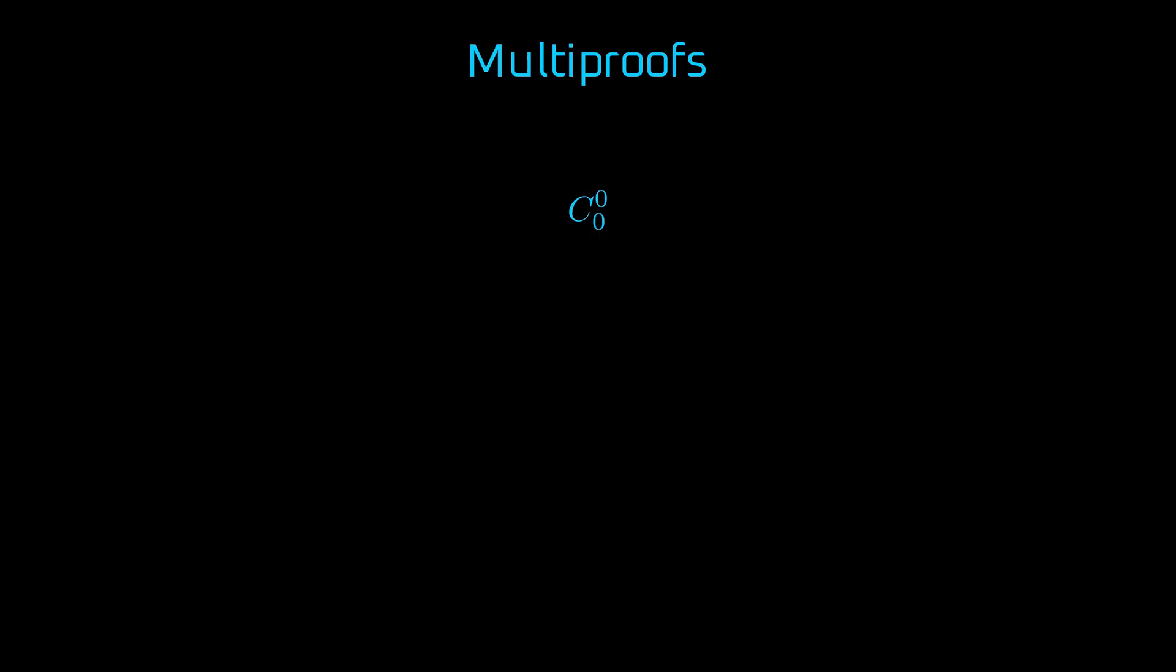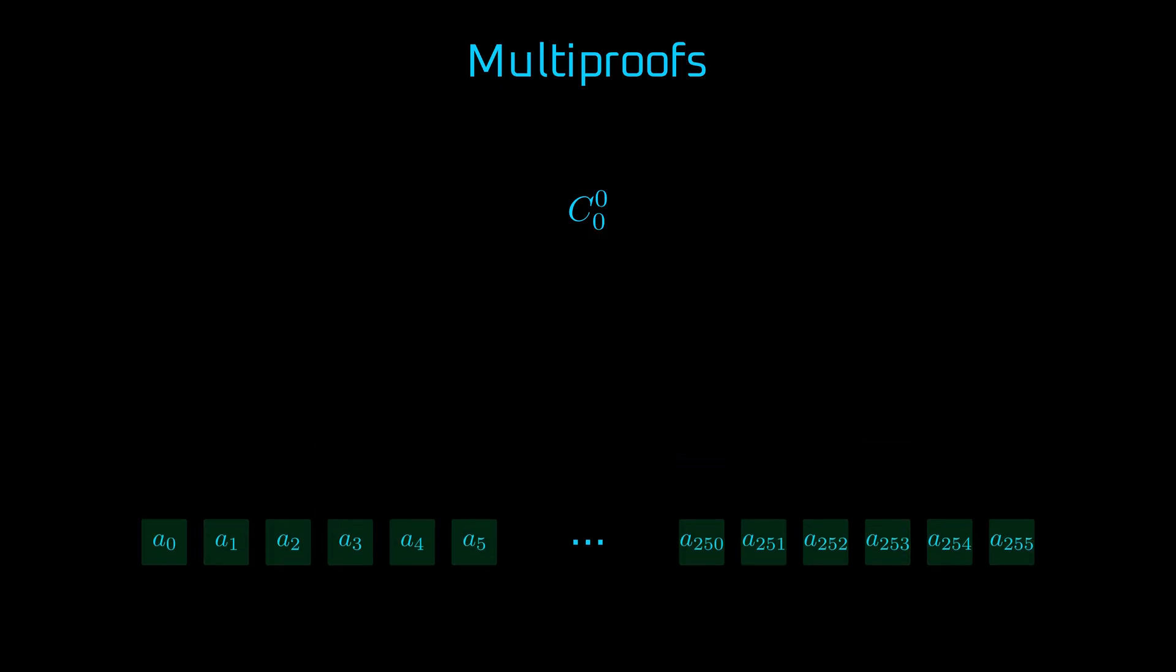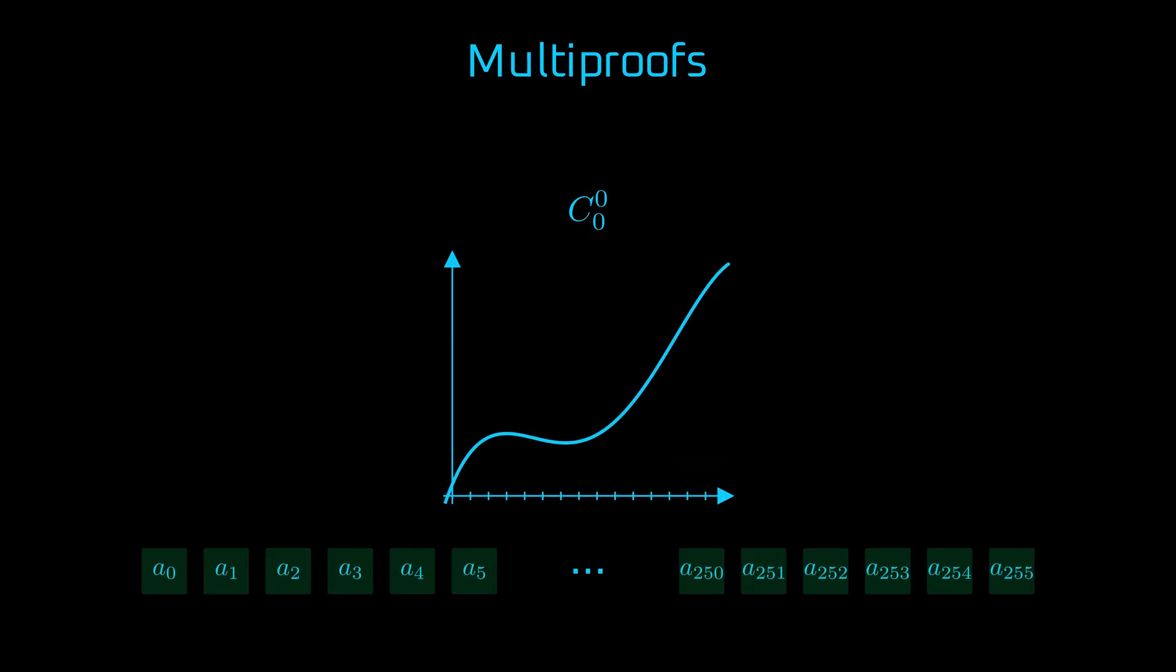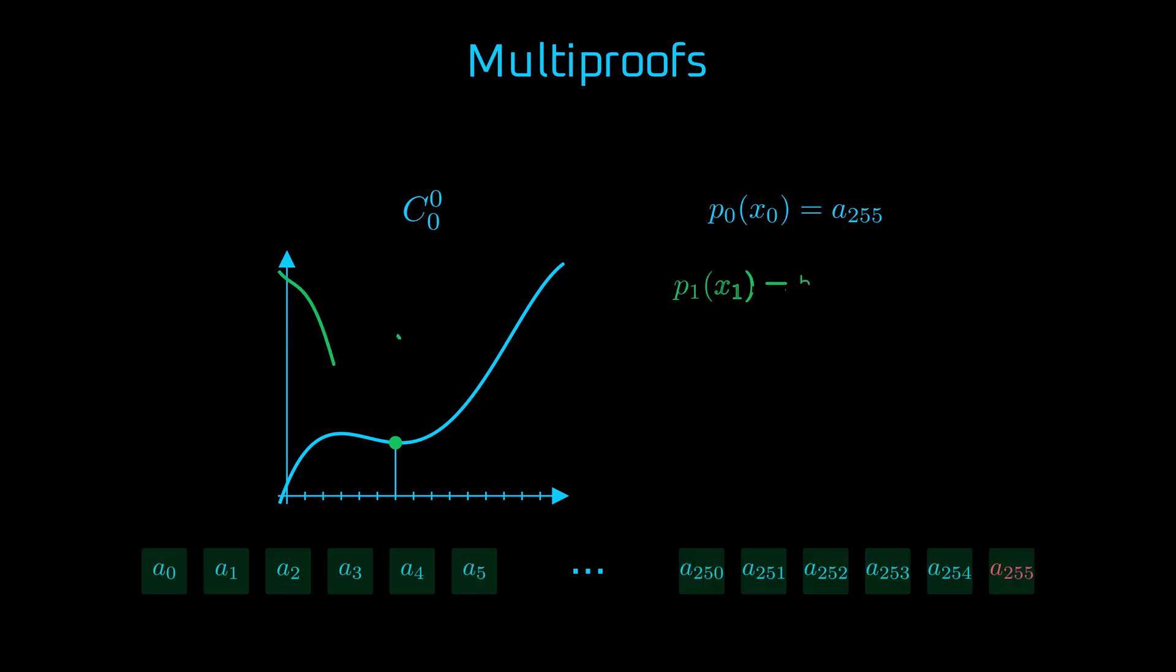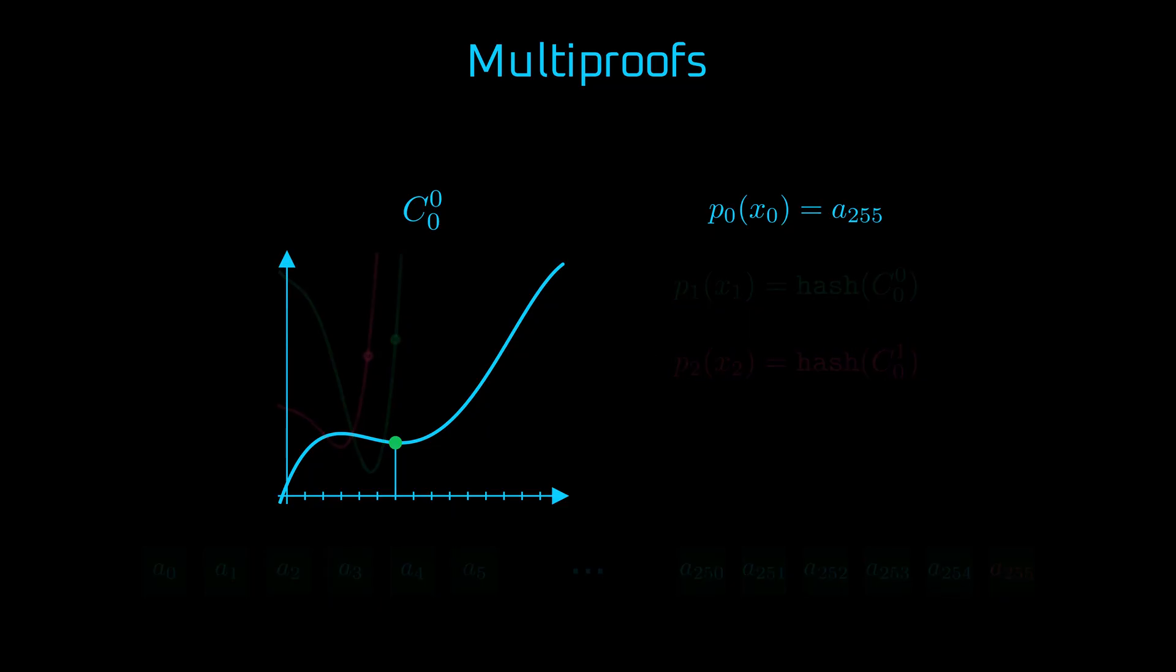Each commitment corresponds to a data vector. Regardless of the scheme, KZG or IPA, we always represent that vector as a polynomial. Then the commitment openings are as follows. The evaluation of P0 at X0 is A255. P1 at X1 is equal to the hash of C0,0 and the third polynomial, P2 of X2 equaling the hash of C0,1. Each of them can be represented as a point on a different curve. But let's focus as an example on the first opening. P0 of X0 is A255.